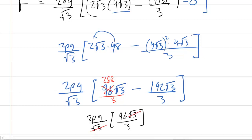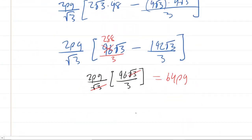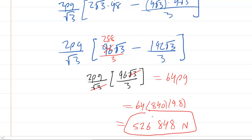The radical threes cancel. You could do two times 96 divided by three, and you're going to get 64. Thank goodness. So you get 64 times the density times g. Recall that the density given in the question was 840. So we can actually go in and plug in 840 times 9.8, which is the value for g. And we finally have an answer here. It's going to be 526,848. This will be in newtons. And that is the total force acting on the side of that trough.